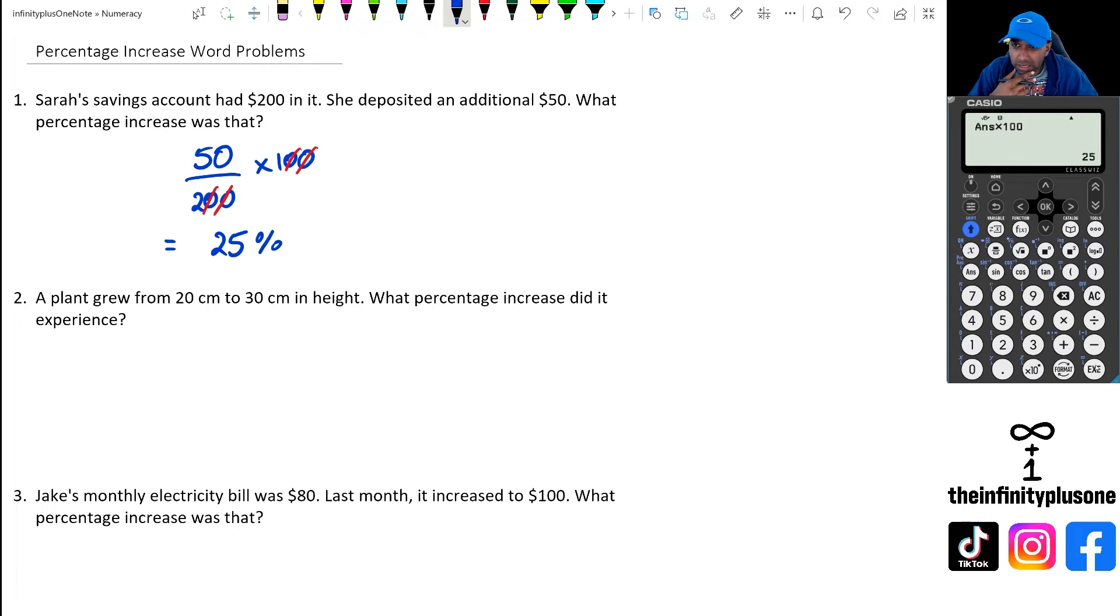Now with question two, a plant grew from 20 centimeters to 30 centimeters in height. What percentage increase did it experience? There's two ways to do this. The first thing we can do is we could figure out how much difference has it gone up by and then work that out of the original percentage.